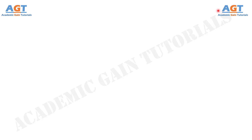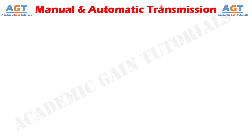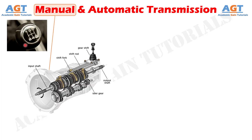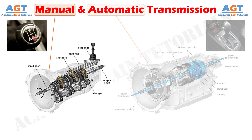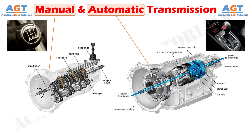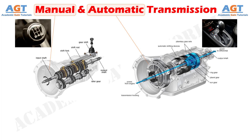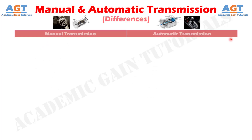Welcome to academic game tutorials. In this video, we will look into the differences between manual transmission and automatic transmission. To understand simply, the transmission in which the shifting of gears is done by the driver is called manual transmission. On the other hand, the transmission in which the shifting of gears is done by the car is called automatic transmission. Let's look into the basic differences between manual transmission and automatic transmission in a tabular form.